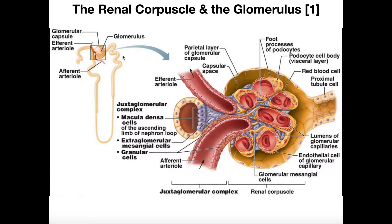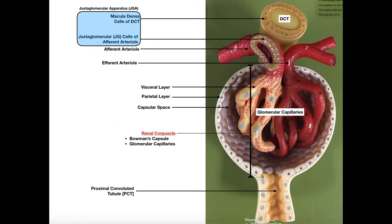This is actually the functional unit that forms urine, and it does so by filtering the blood. Now let's talk about the individual pieces of the renal corpuscle. I'm going to use this model — I like it a little bit better. This entire thing — the space inside, the capillaries inside, and the outer layer of cells — this whole thing is called the renal corpuscle. It's like a shell. The outer layer of cells form what's called the parietal layer, and that pretty much forms the capsule itself, which we call Bowman's capsule.